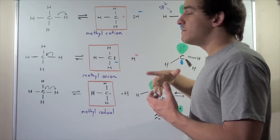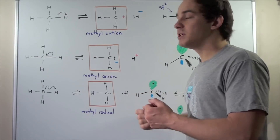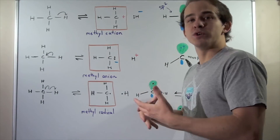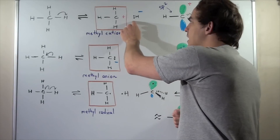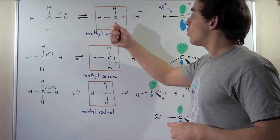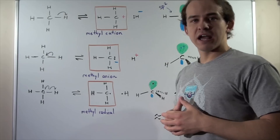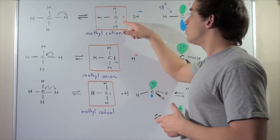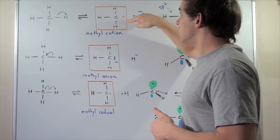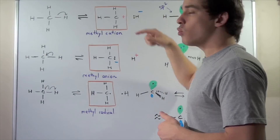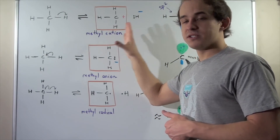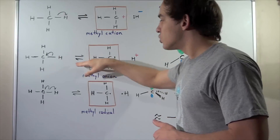The hydride ion will be very active because it will tend to act as a Lewis base, donating that pair of electrons. Likewise, the methyl cation will also be very active — it will tend to accept a pair of electrons into its empty orbital, which we'll see in just a second.